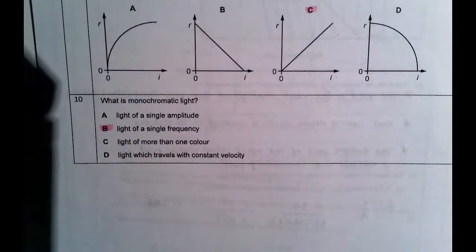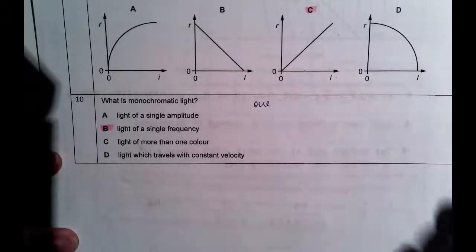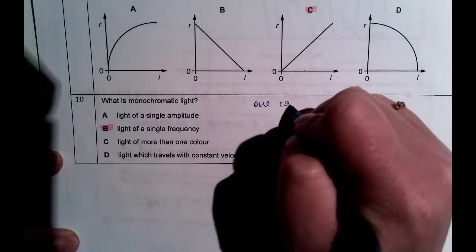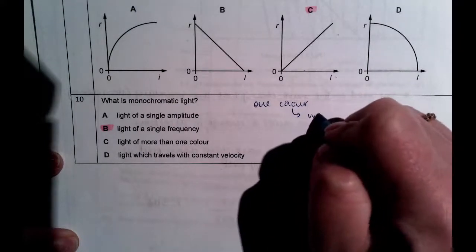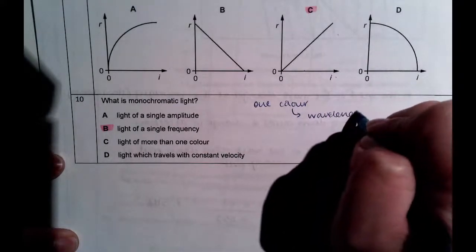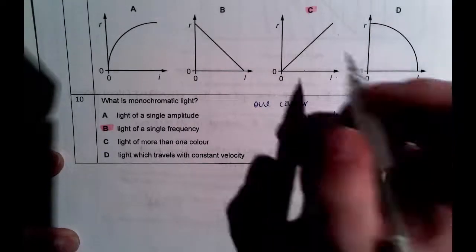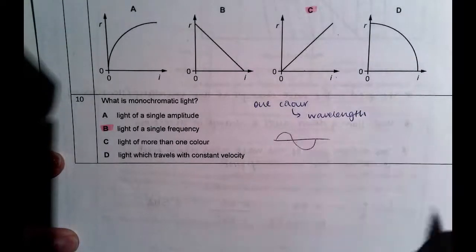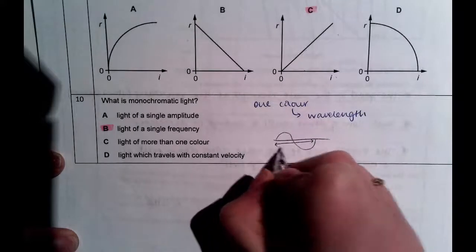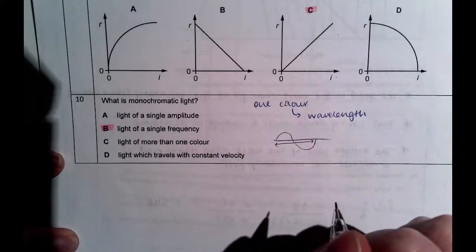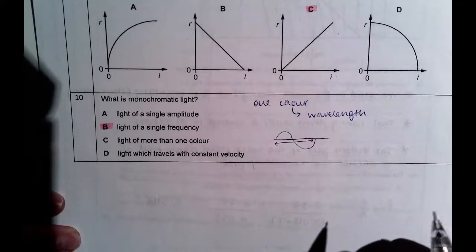Question 10 — monochromatic. 'Mono' means one; 'chromatic' tells you it's about colour, but in physics terms we change that to wavelength. If we have one wavelength of light, then we must also have one frequency. So monochromatic light is light of a single frequency.